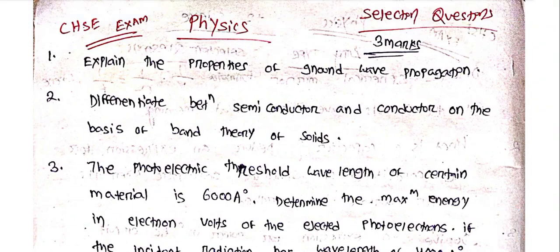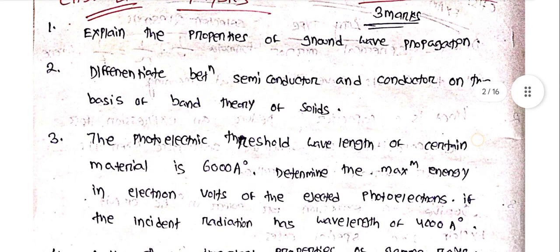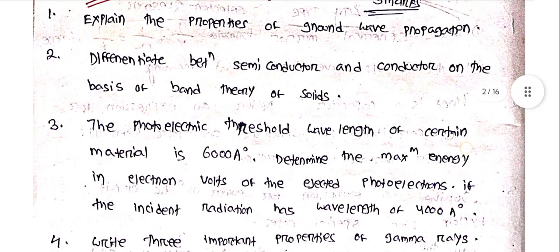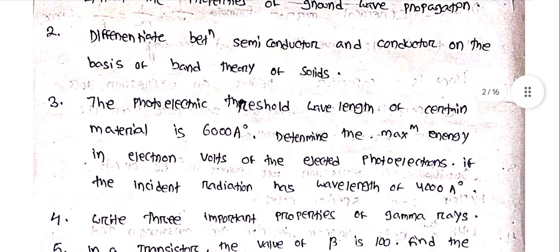Physics Pariksha important questions: Explain the properties of ground wave propagation. Differentiate between semiconductor and conductor on the basis of band theory of solids.